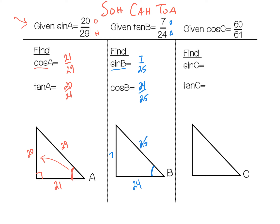Last one: the cosine of C is 60 over 61. Cosine is adjacent over hypotenuse, so the adjacent side is 60 and the hypotenuse is 61. Using the Pythagorean theorem, 61 squared minus 60 squared gives us 11 squared, so the missing side is 11. The sine of C is opposite over hypotenuse — 11 over 61. The tangent of C is opposite over adjacent — 11 over 60. Your assignment today will have ratios like this where you find the missing side and then find a ratio, as well as some straightforward setups.